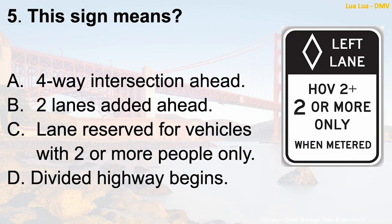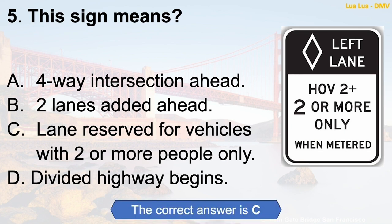Question 5: This sign means — A. Four-way intersection ahead. B. Two lanes added ahead. C. Lane reserved for vehicles with two or more people only. D. Divided highway begins. The correct answer is C: Lane reserved for vehicles with two or more people only.